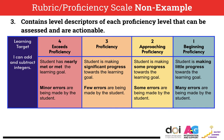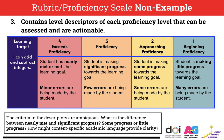Now let's take a look at a rubric that is not yet proficient based on criteria number three. You'll notice this proficiency scale also goes from one to four. If you'd like, you can pause the video to try to identify why these descriptors do not meet the criteria. The descriptors don't meet the criteria because they're ambiguous — they're open for interpretation and unclear to a student. For example, what is the difference between making little progress and making some progress? What is the difference between some errors and few errors?